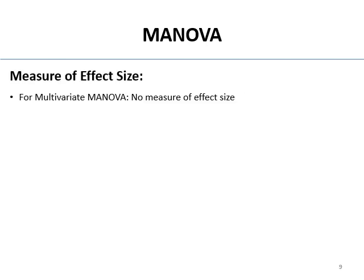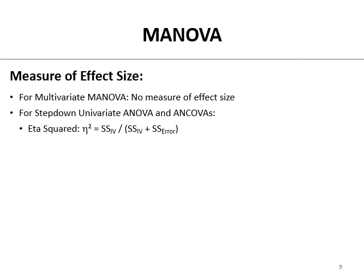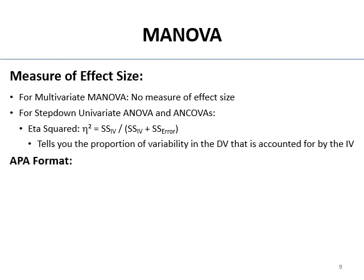For effect size: there is no eta squared, omega squared, or R squared for the multivariate MANOVA where it puts all the DVs together into the combined mean. For the step-down univariate ANOVAs and ANCOVAs, it's just eta squared again — the sum of squares for the IV divided by the sum of squares for the IV plus the sum of squares for the error. That tells you the proportion of variability in the DV accounted for by the IV.